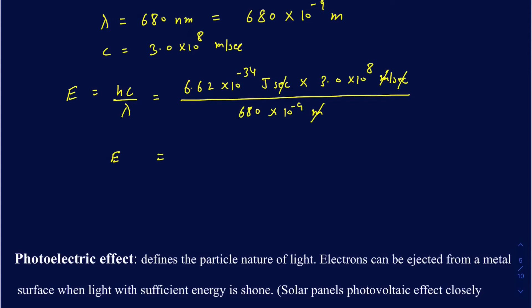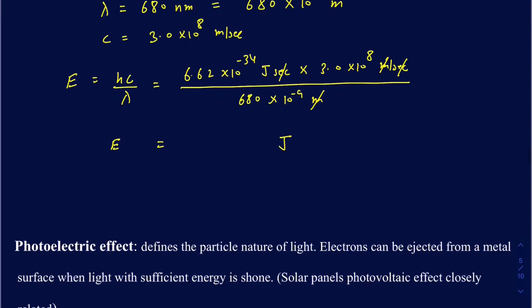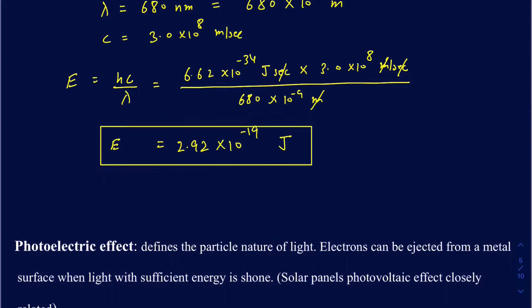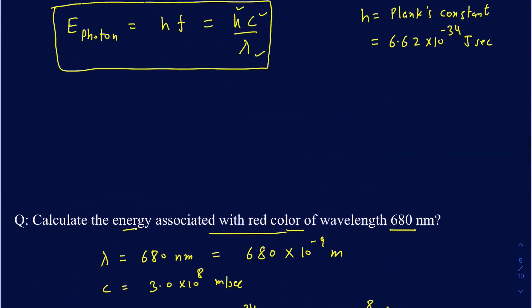After plugging those numbers into the calculator, I get 2.92 times 10 to the minus 19 joules of energy associated with that particular wavelength. That's how you calculate energy when given the wavelength. If you're given the frequency instead, just use the first formula and multiply the frequency by Planck's constant to get the energy of the photon.